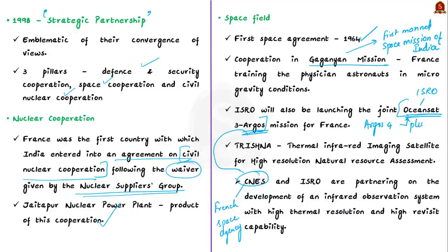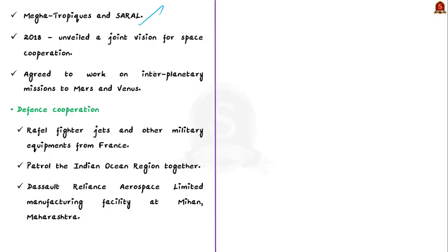TRISHNA — Thermal Infrared Imaging Satellite for High Resolution Natural Resource Assessment — is another important area of collaboration. It is the latest satellite in the joint Franco-Indian satellite fleet dedicated to climate monitoring and operational applications. The French Space Agency and ISRO are partnering on an infrared observation system with high thermal resolution and high revisit capability, including a satellite and associated ground segment. Other missions like Megha-Tropiques and SARAL also represent high points of India-France space cooperation.